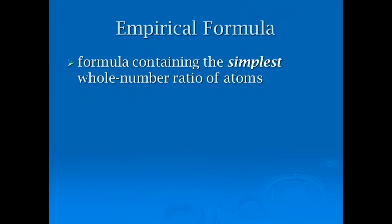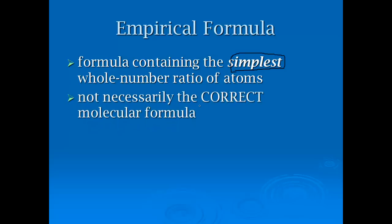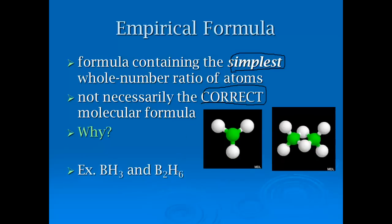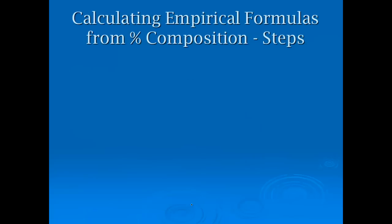We're going to talk about two different types of formulas. The first is the empirical formula. Empirical formula contains the simplest whole number ratio of atoms. It's not necessarily the correct molecular formula or actual formula of the molecule. Here's boron trihydride BH3 and diboron hexahydride B2H6, two very different compounds, but they both reduce to BH3, so they both have the same empirical formula but different molecular formulas.